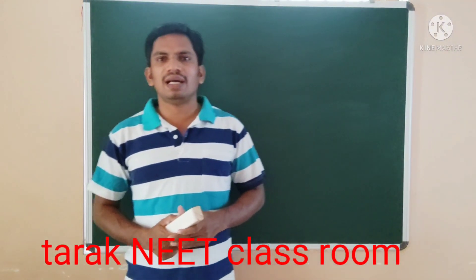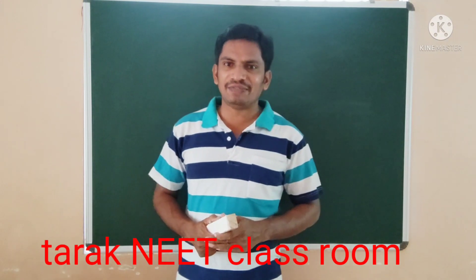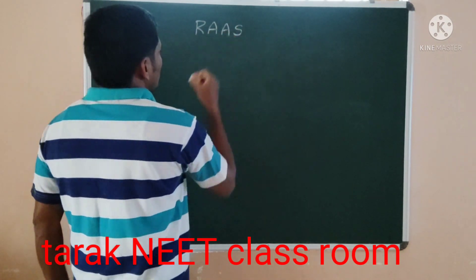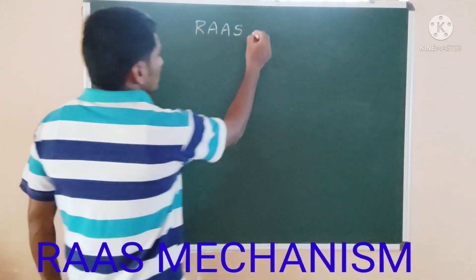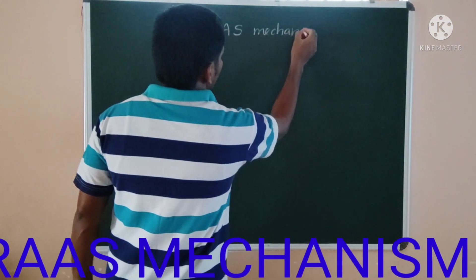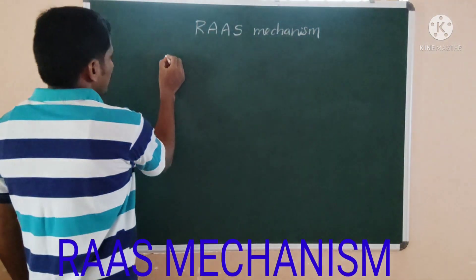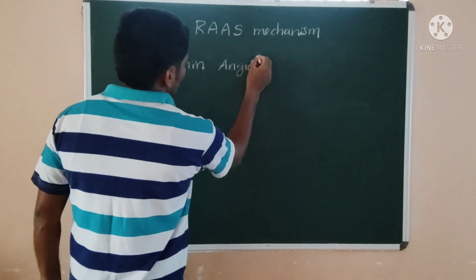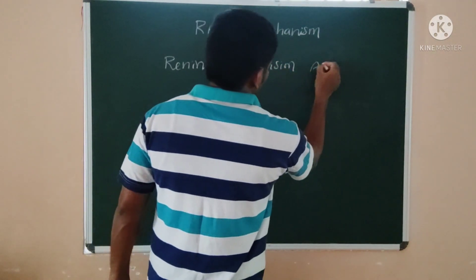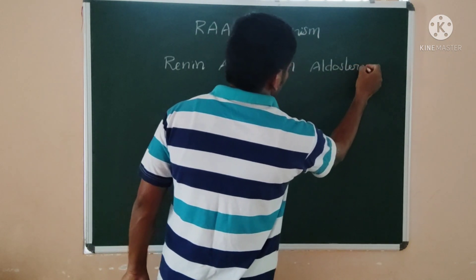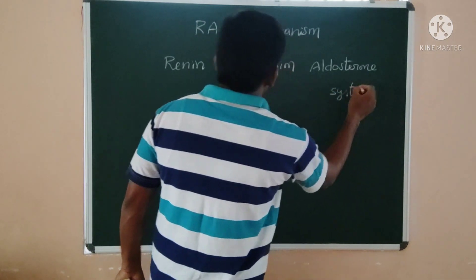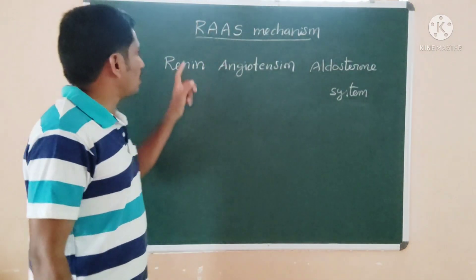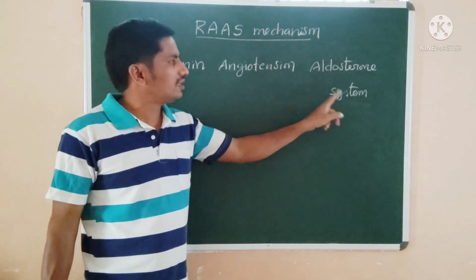Hi students, today I'm going to discuss the mechanism of kidney function. The first one is the RAS mechanism. RAS mechanism stands for Renin-Angiotensin-Aldosterone System — this is the full form of the RAS mechanism, and we will focus on how it is regulated.